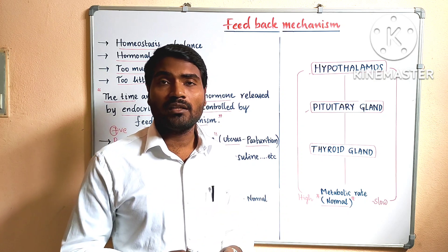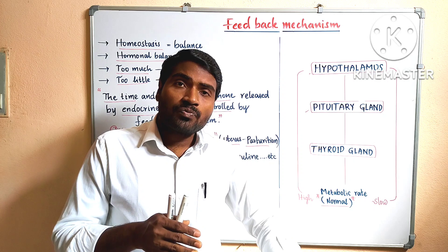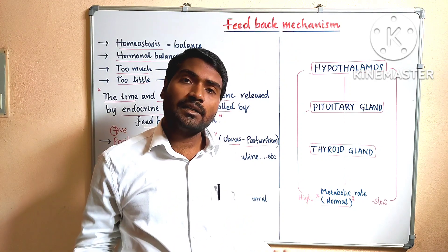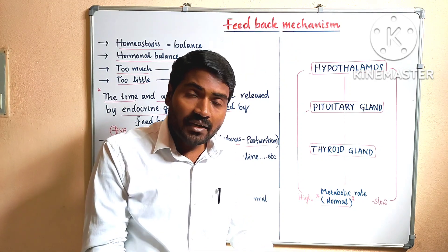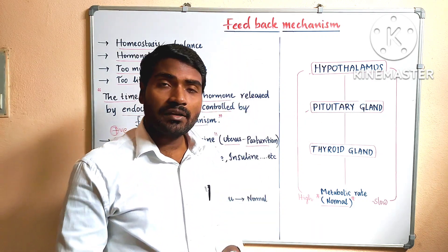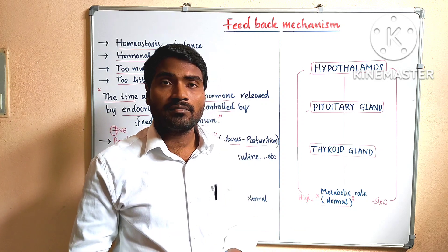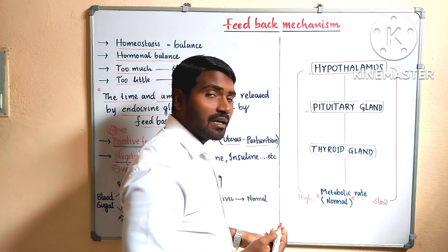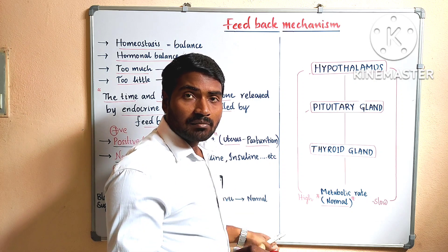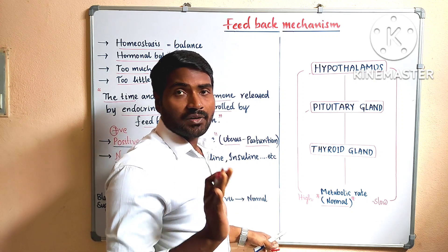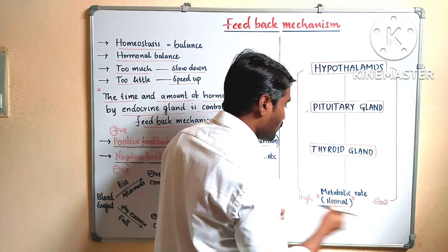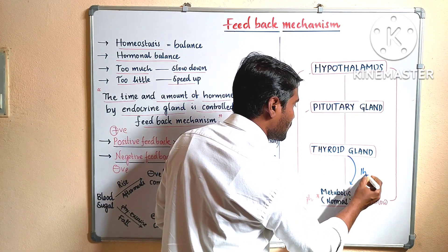What is meant by negative feedback mechanism? If the hormone level is very low, it stimulates the hypothalamus to produce more. Low level, high level — this is called a negative feedback mechanism. If the hormone level is high in the body, then it stimulates the hypothalamus to produce less hormone. Let's take the example of the thyroid gland. The feedback mechanism of all glands occurs in this way. The thyroid gland produces a hormone called thyroxine.